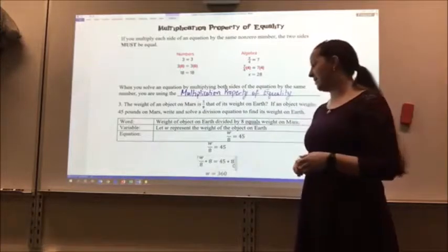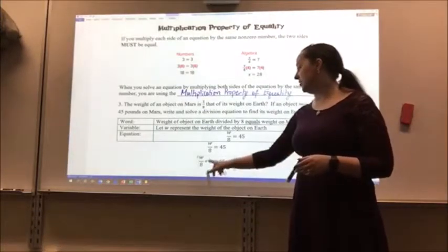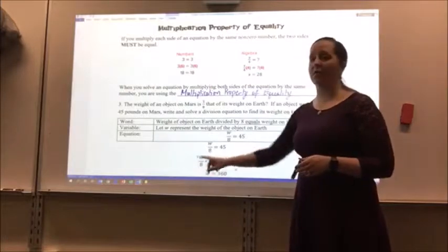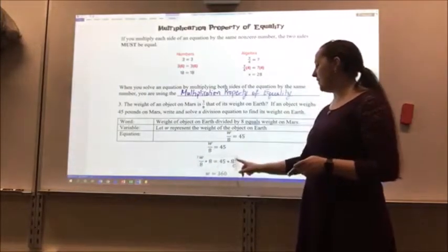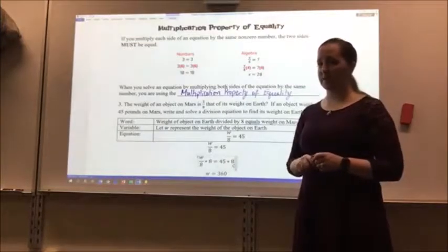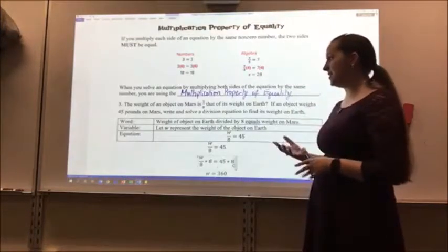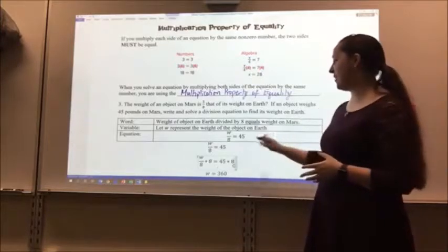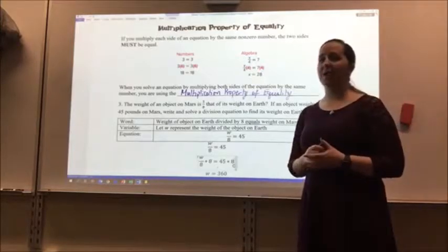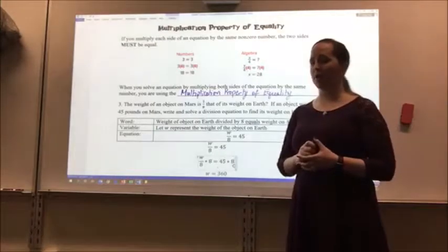I multiply both sides by 8. When I do this, the 8 cancels out here on the left side of my equation, and I'm left with W. And 45 times 8 is 360. So this means that the weight of an object on Earth, if it was 45 pounds on Mars, is 360 pounds on Earth.